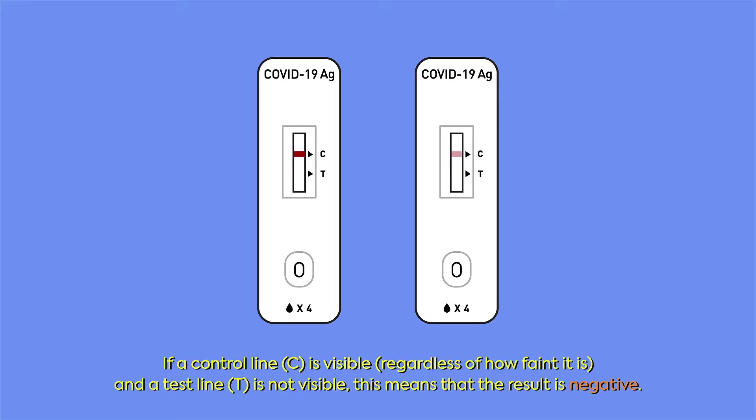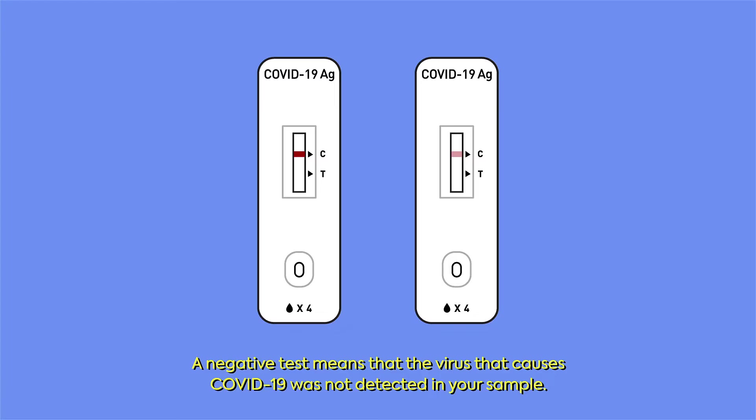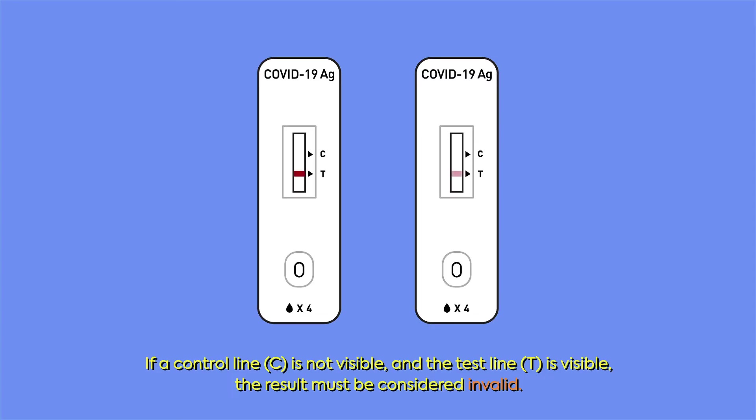If a control line C is visible, regardless of how faint it is, and a test line T is not visible, this means that the result is negative. A negative test means that the virus that causes COVID-19 was not detected in your sample.